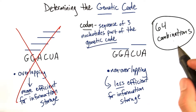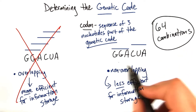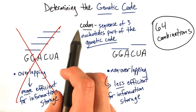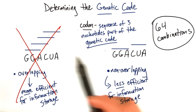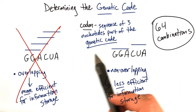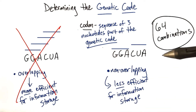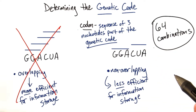So this means that we're left with 64 possible combinations of three nucleotides, and each set of three is referred to as a codon. So we have 64 possible codons. A codon is just a sequence of three nucleotides which are part of the genetic code. It took years of experiments to finally determine exactly which codons code for which amino acids, and this information is referred to as the genetic code.